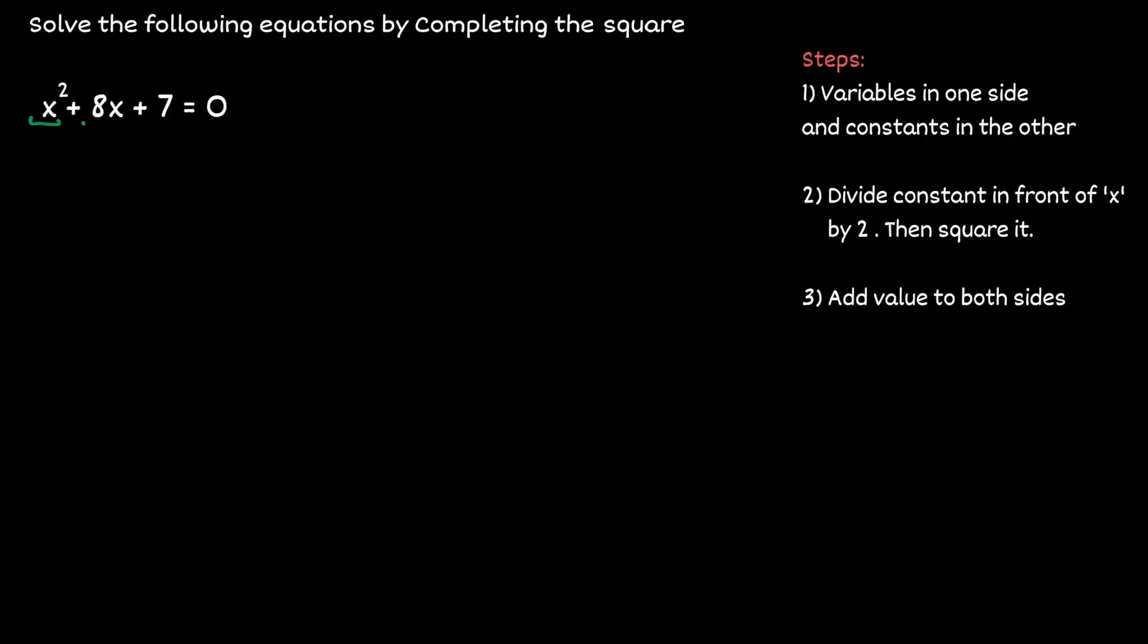In our equation, notice that we have three terms. The first two have a variable of x, so let's keep these two terms on the left hand side. And the last term that has a constant of seven, let's move it to the other. Let's do that by subtracting seven on both sides.